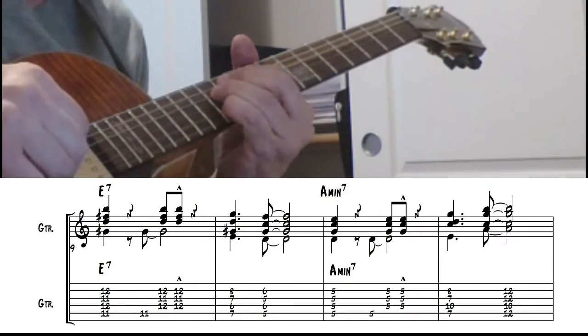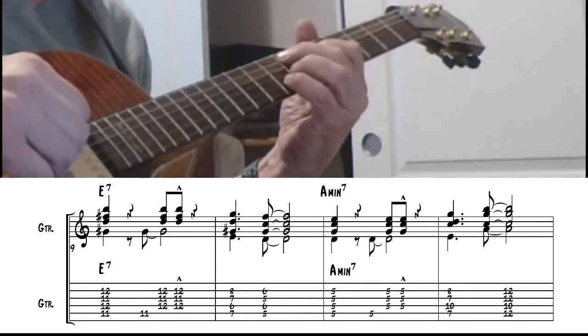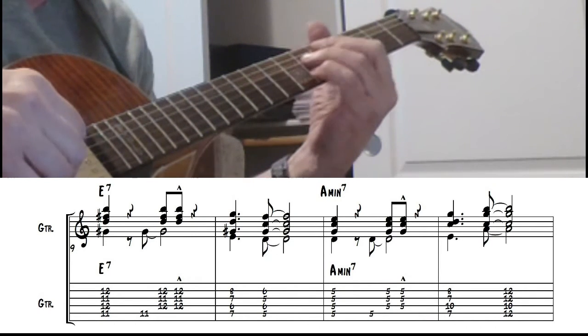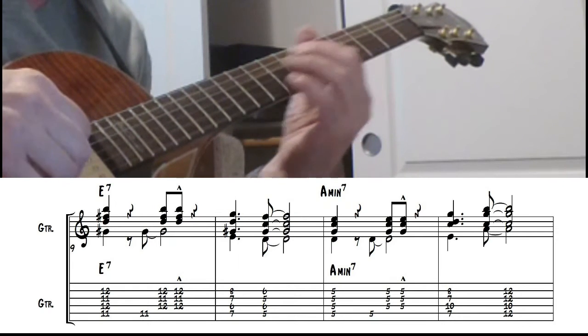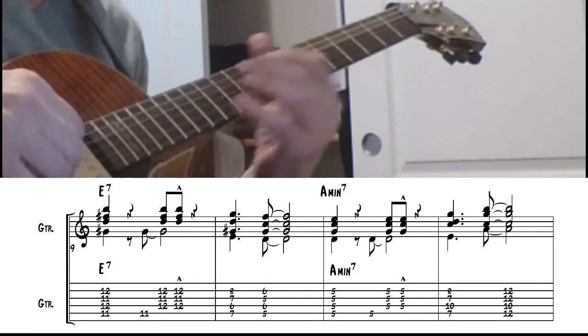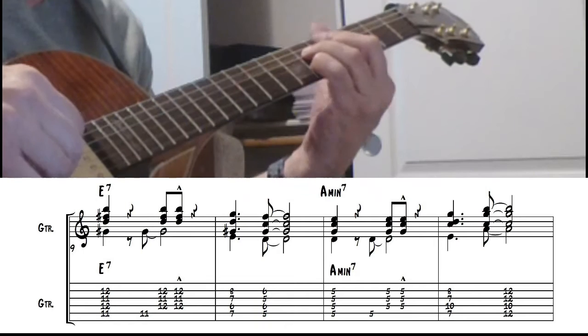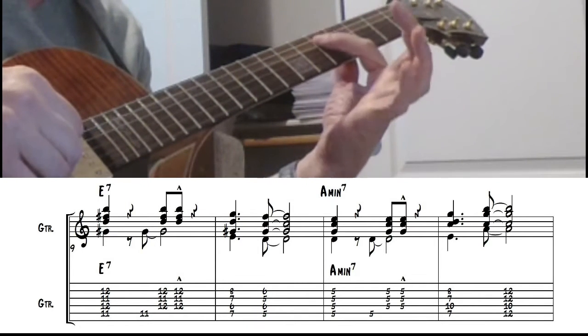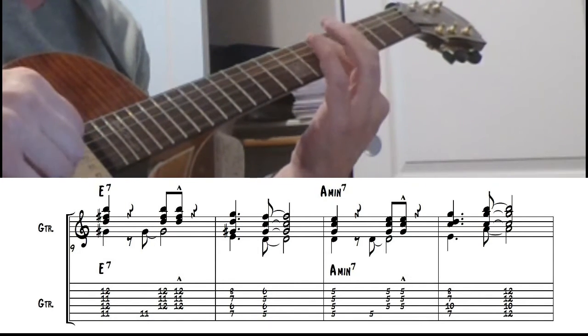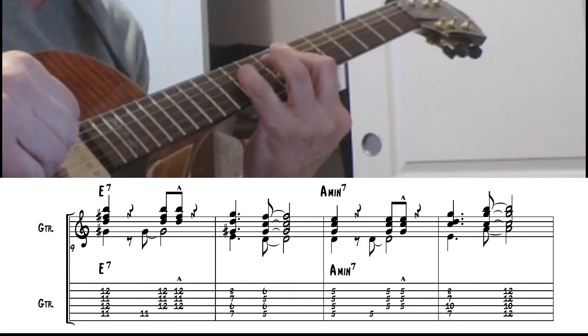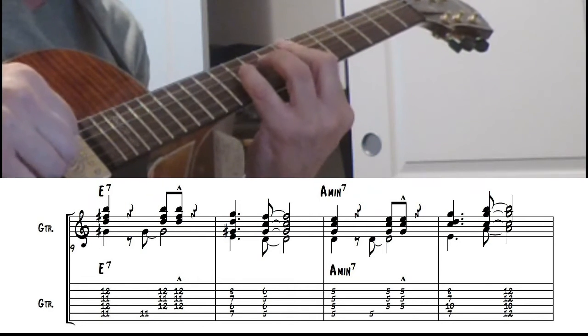Just an E9 here. Create a little tension with the sharp 9. Flat 9 and b13. Here I'm putting the 4th in the bass. That's a real nice voicing. That also works for a C chord.